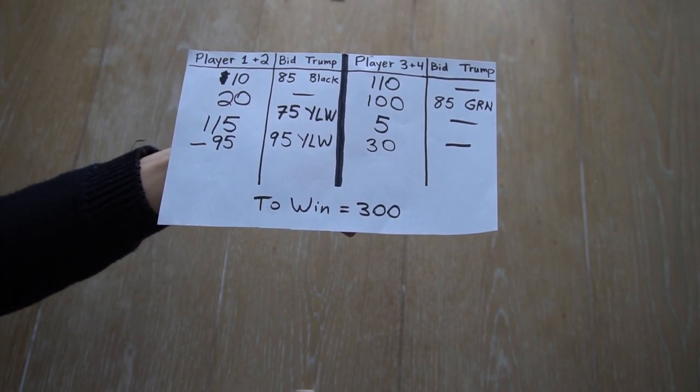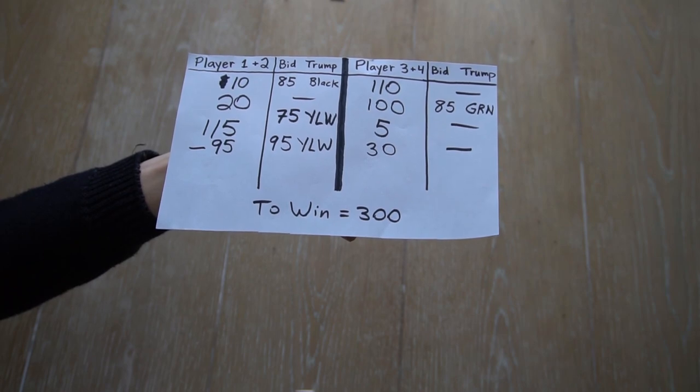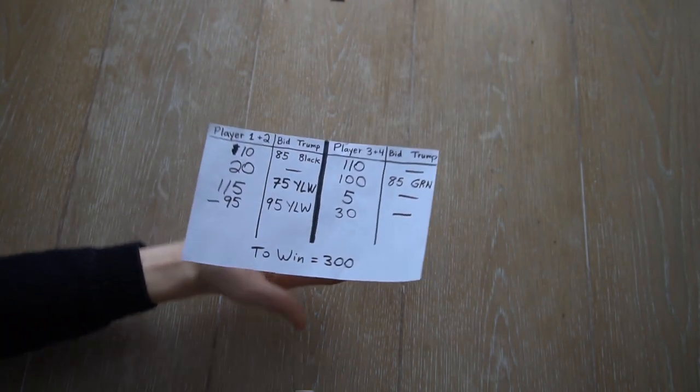the team on the left bid 95 but was only able to get 90 points. So all they scored for that round was a negative 95.